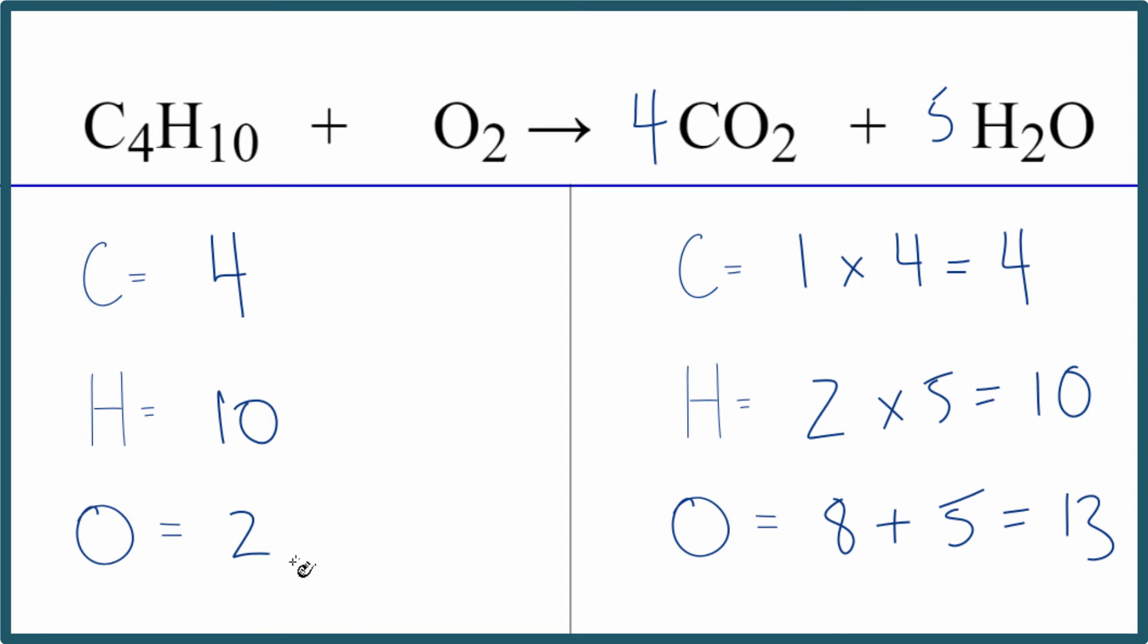So I want to multiply two by some number that'll give me 13. Two times 13 over two. Two times 13 over two, those cross out, we're left with 13. So we're just going to put 13 over two as our coefficient in front of the oxygen.